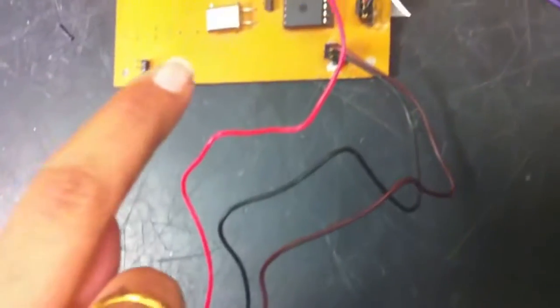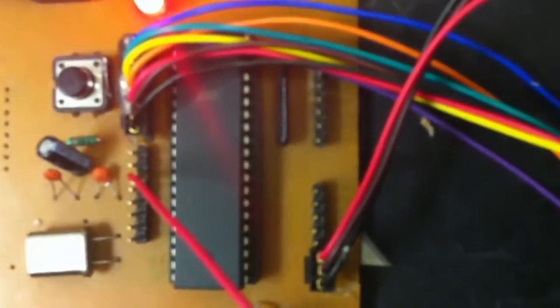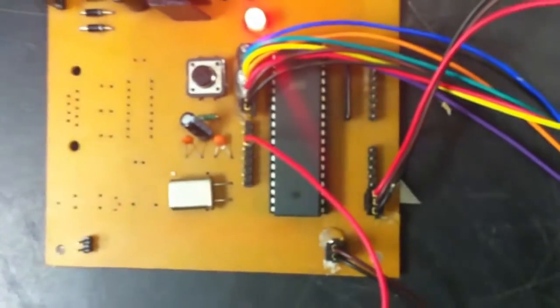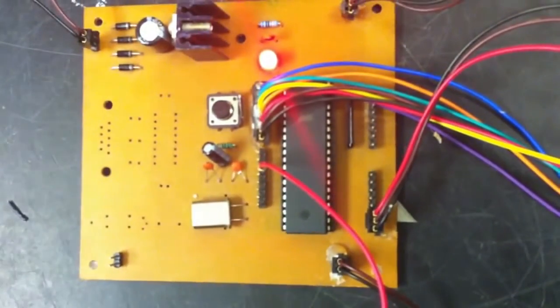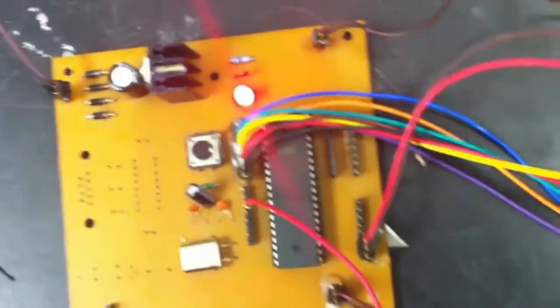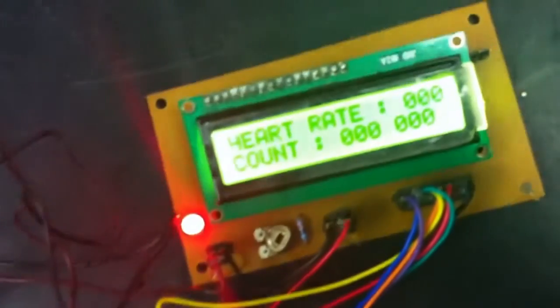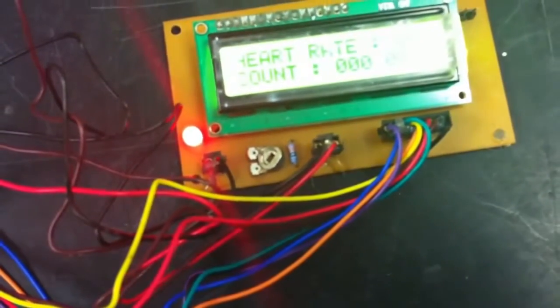The output from the filters is given to a microcontroller which has an inbuilt ADC. The ADC converts the analog signals into digital ones and sends them to the LCD. The output of the LCD displays the heart rate counted in particular time delays. The count of heartbeats per minute is displayed.